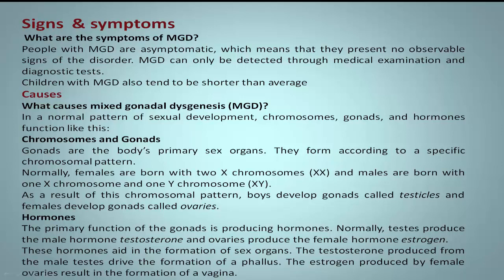Normally, testes produce the male hormone testosterone and ovaries produce the female hormone estrogen. These hormones aid in the formation of sex organs.